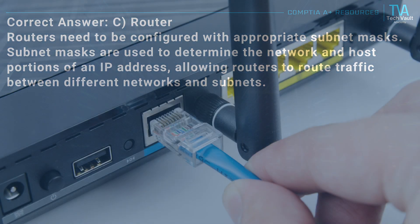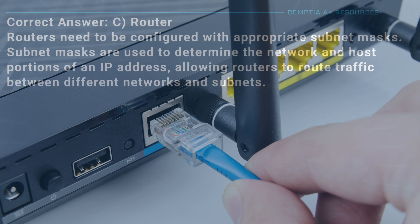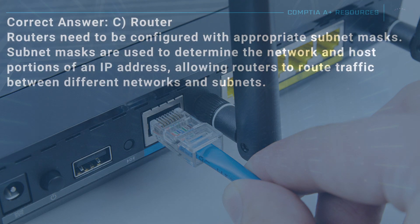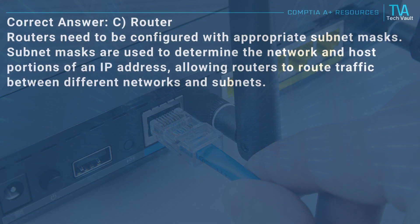Correct answer: C, router. Routers need to be configured with appropriate subnet masks. Subnet masks are used to determine the network and host portions of an IP address, allowing routers to route traffic between different networks and subnets.